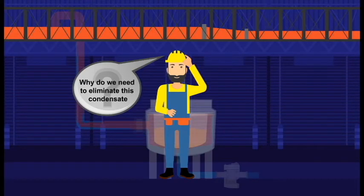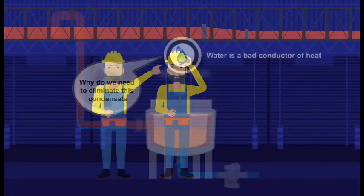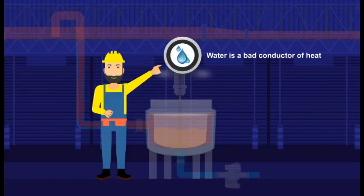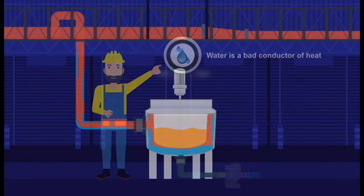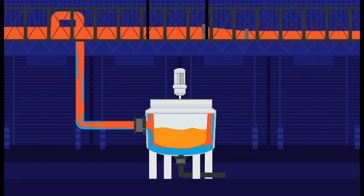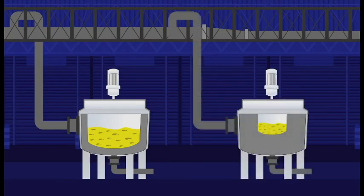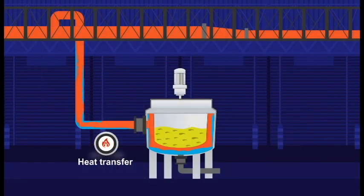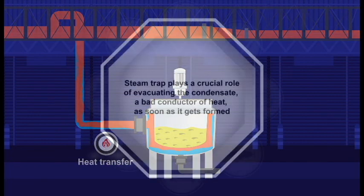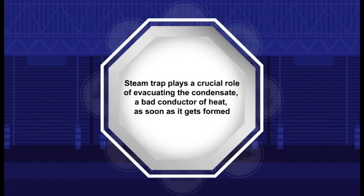Have you ever wondered why do we need to eliminate this condensate? The only reason we need to remove the condensate as soon as it gets formed inside the jacket is because water is a bad conductor of heat. Having a layer of condensate between the steam and the jacket is similar to trying to heat a product in an equipment with walls as thick as brick. Thus, to improve the process of heat transfer from the steam to the product, a steam trap plays a crucial role of evacuating the condensate, a bad conductor of heat, as soon as it gets formed.